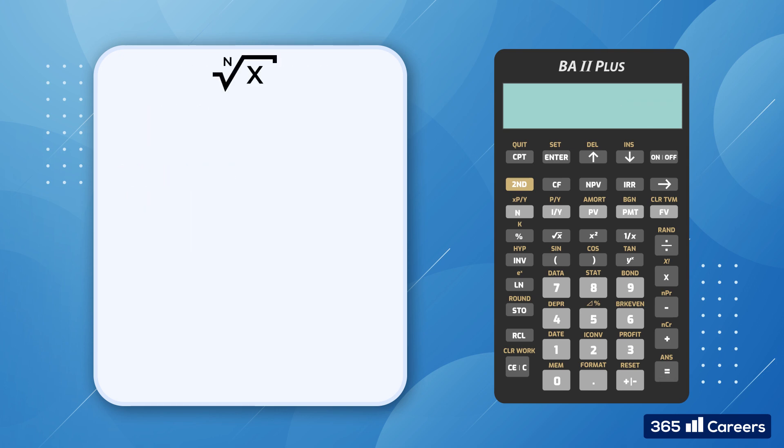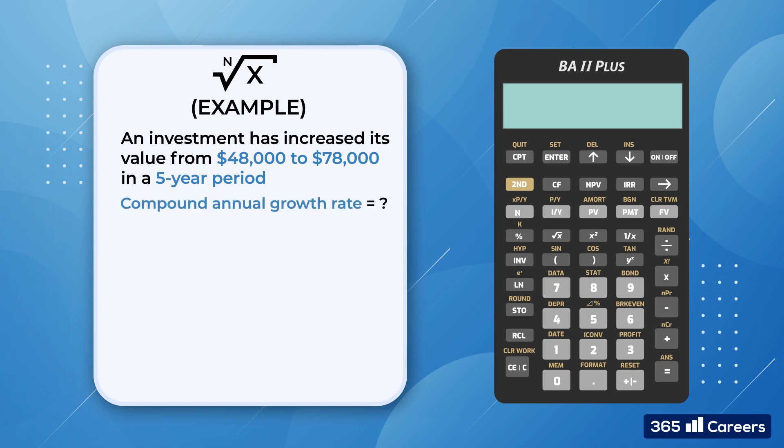Now, let's take the nth root of a number. Here's a task. So, we will look at an investment which has increased its value from $48,000 to $78,000 in a five-year period. We would like to calculate its annual compound growth rate. Here is the formula to be used. We divide the current market value by the initial investment, then take the nth root of the value and subtract 1 from the result. This is a very frequently tested topic at the CFA exam.